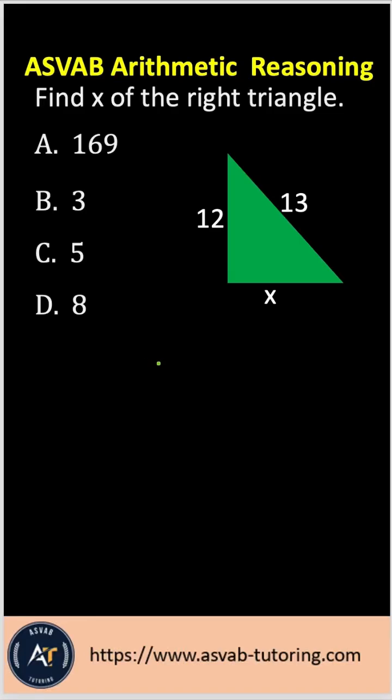In this ASVAB arithmetic reasoning question, you're asked to find x of a right triangle. If you're asked to find the missing side of a right triangle, that means you have to use the Pythagorean theorem, which is a squared plus b squared equals c squared.